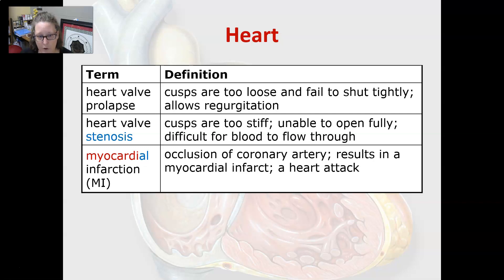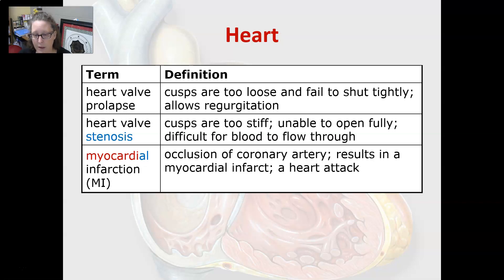A myocardial infarction, or MI — also called acute MI or AMI — is the occlusion of a coronary artery by a blood clot or plaque blockage. It results in a myocardial infarct: a lack of blood flow and necrotic tissue downstream of the blockage. This is called a heart attack.